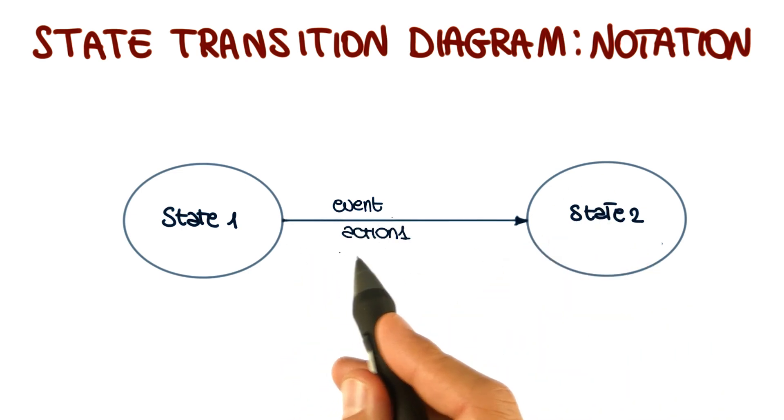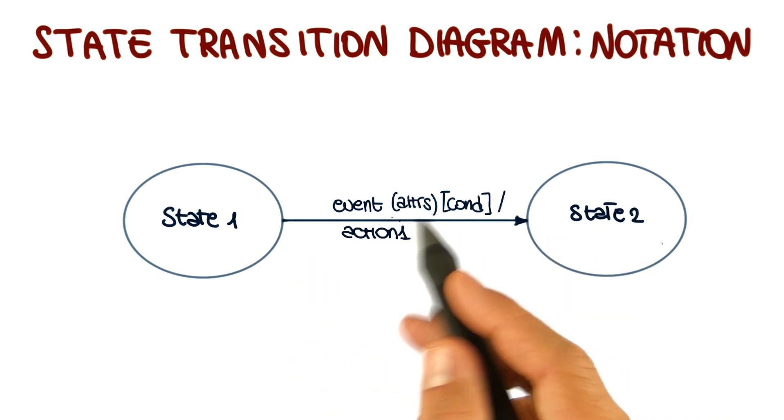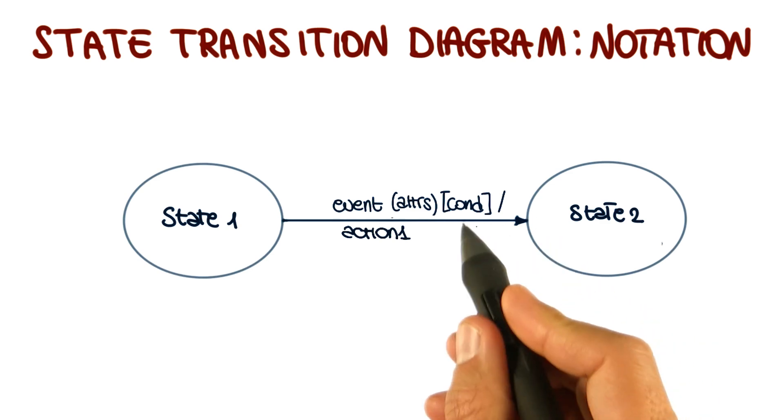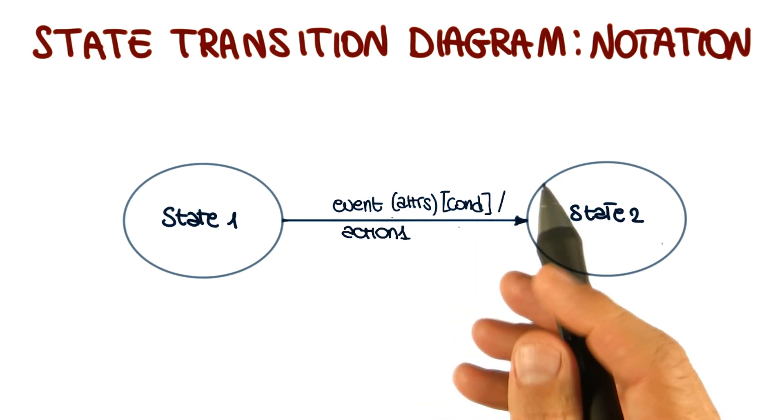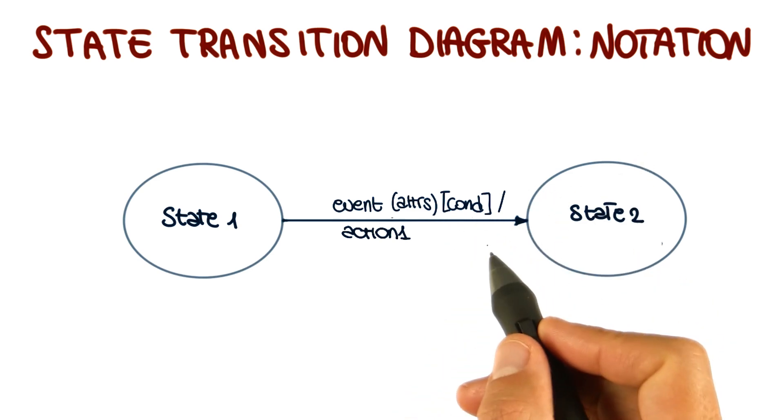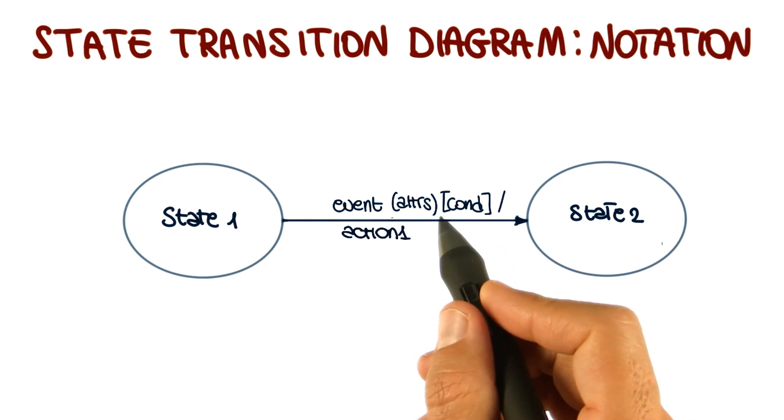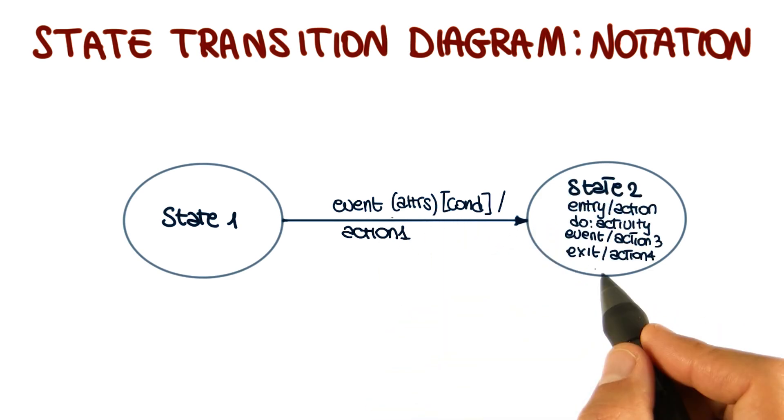Events might also produce actions and they might have attributes, which are analogous to parameters in a method call, and boolean conditions that guard the state transition. That is, prevent it from happening in the case the conditions are not satisfied. States might also be associated with activities and actions.